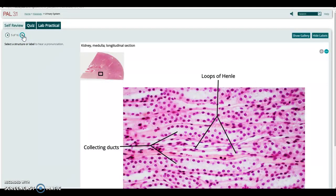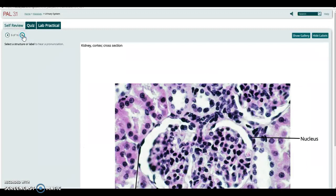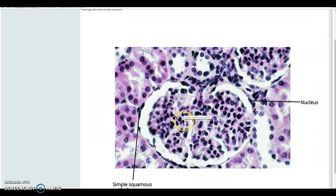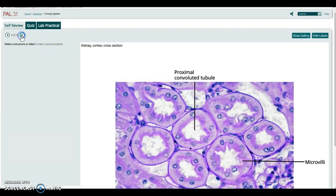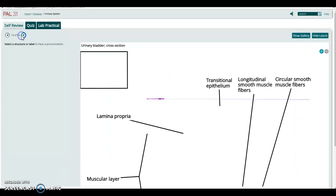More tubing, collecting ducts, loops of Henle collecting ducts. There's another really highly magnified glomerulus. More ducts and tubing.